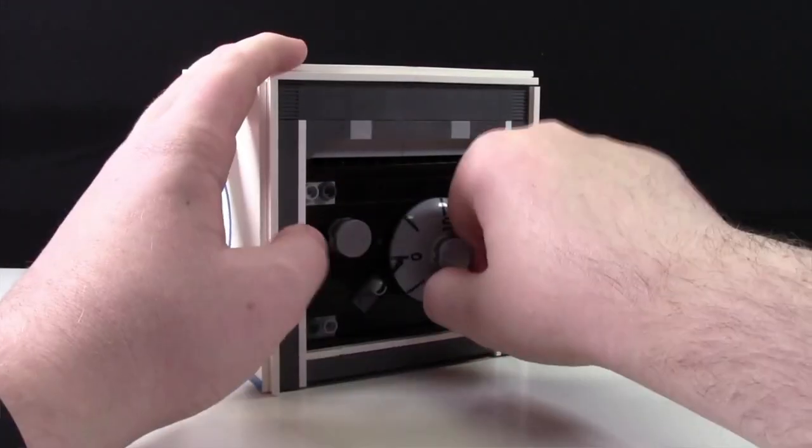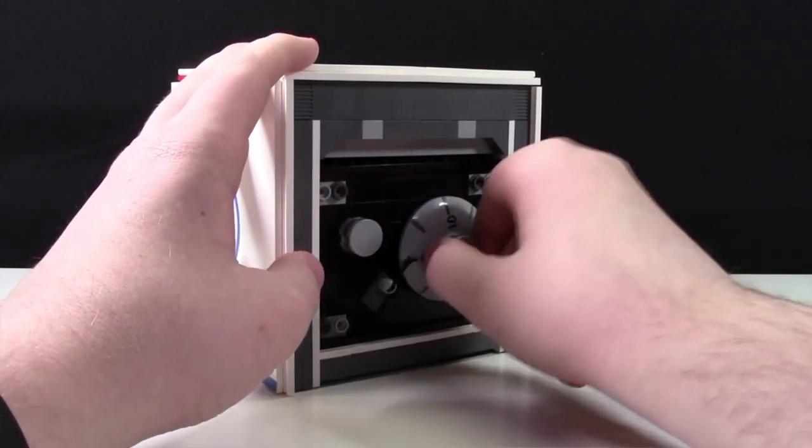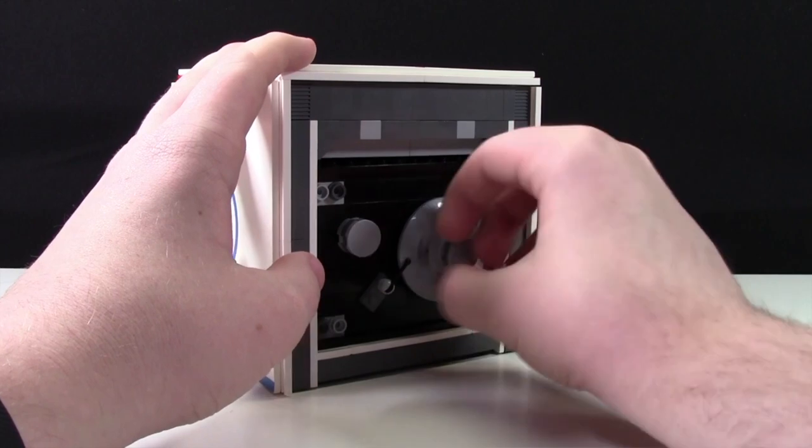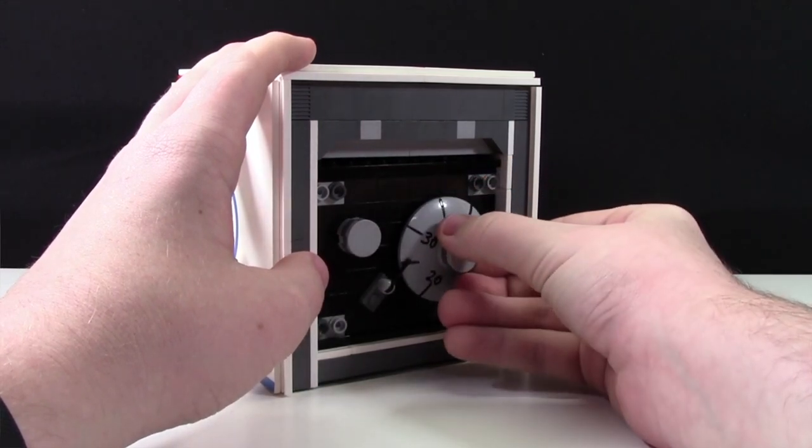For me, the mechanics of the safe were definitely the hardest part in making the safe. Once I had made the mechanics and the actual inside of the safe, making this outside box was pretty easy.